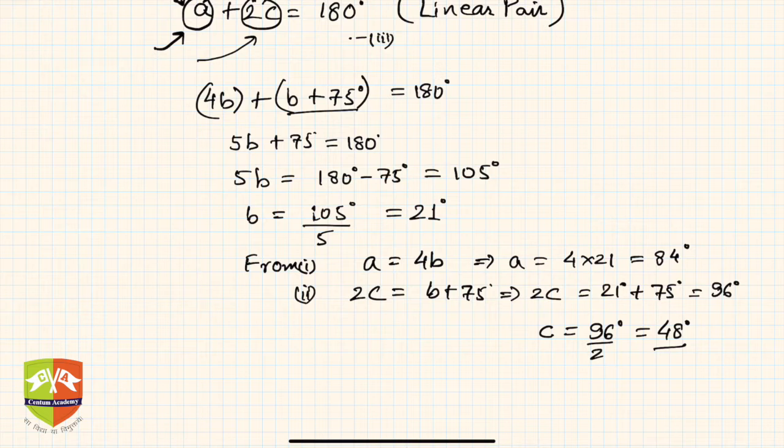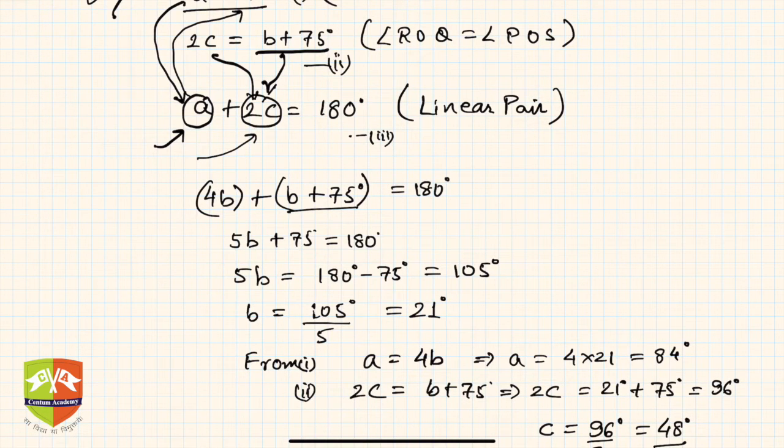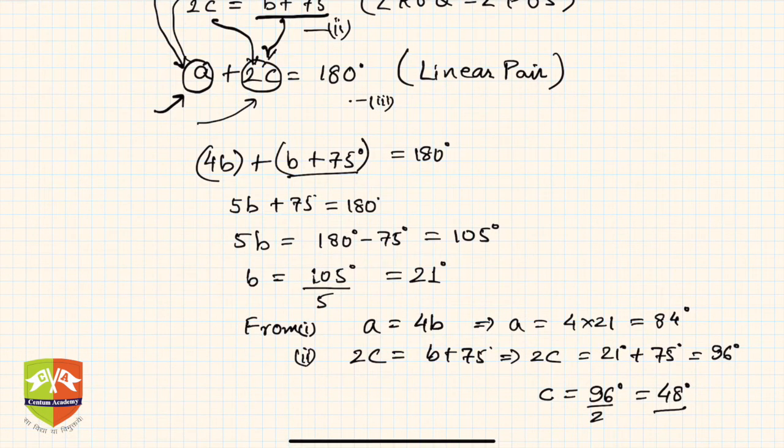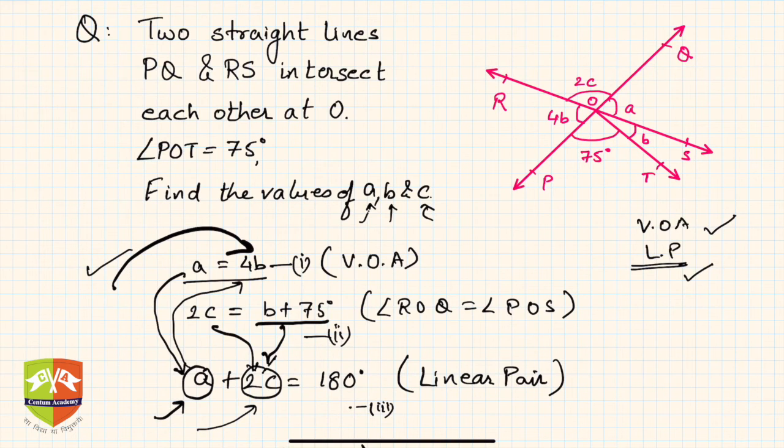So a, b, and c, all three values we could figure out. a is equal to 84, b is 21, and c is 48 degrees. Hence the problem is solved. So what is the learning? The learning is use of vertically opposite angles and linear pair. Using that we framed three equations and then it was reduced to solving the linear equations to get the final results.